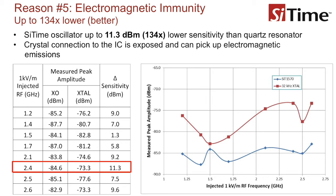Reason number five: MEMS oscillators are much less sensitive to EMI. Electromagnetic energy, which is common in most systems, can be picked up by exposed PCB traces which connect the quartz resonator to the IC containing the oscillator circuit. This noise can be coupled into the oscillator circuit and passed to the output, potentially adding jitter and noise to the system. By contrast, MEMS oscillators have no exposed PCB connections between the MEMS resonator and IC containing the oscillator, and the bond wires that connect the MEMS resonator to the CMOS IC are extremely short. This results in MEMS oscillators having up to 11.3 dBm lower sensitivity than quartz resonators.